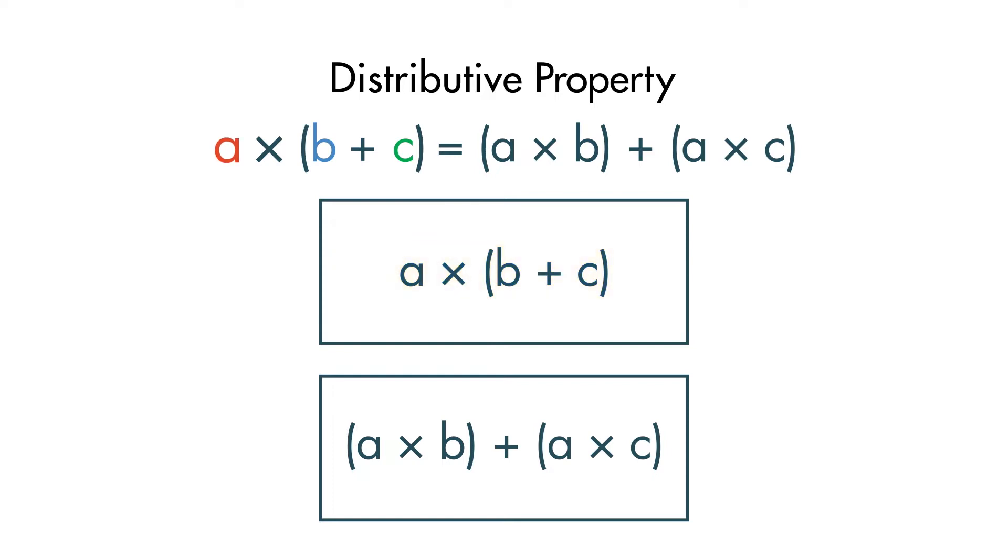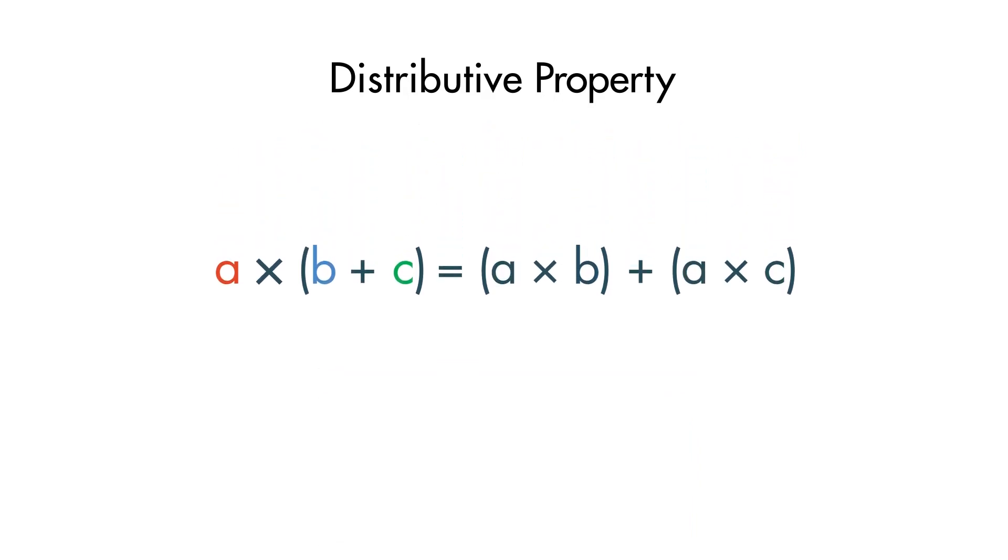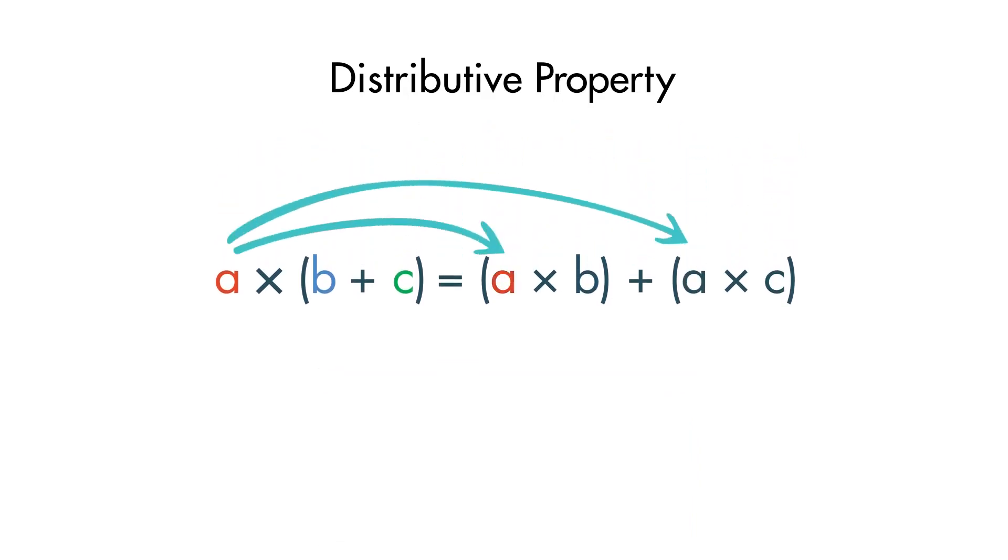We can get the same answer by distributing the multiplier, A, to each of the addends, then add the products. We distribute and multiply A times B and A times C, and then add those products together.